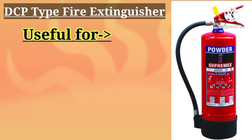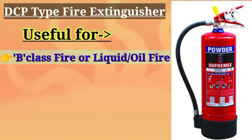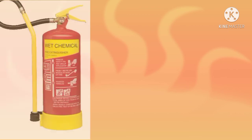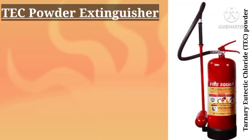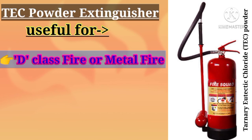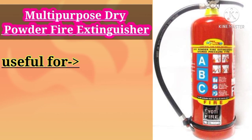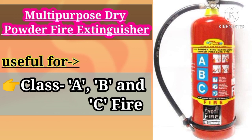Dry chemical powder extinguishers are also widely used for multiple fire classes. Wet chemical type fire extinguisher is used to extinguish Class K fire or kitchen fire. The extinguisher containing ternary eutectic chloride powder is used to extinguish Class D fire or metal fire. Nowadays, mono ammonium phosphate containing extinguishers — also known as multi-purpose dry powder fire extinguisher — are generally used because this type of extinguisher is useful for Class A, B, and C fires.